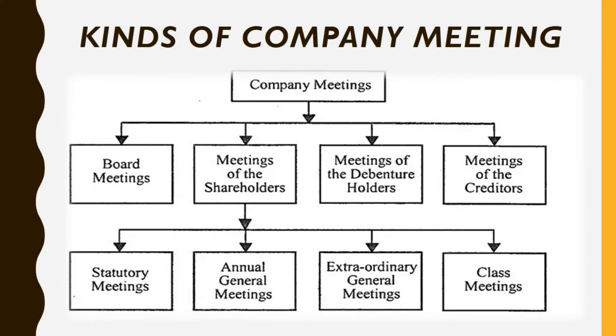The first one is board meetings. The second one is meetings of the shareholders. The third one is meetings of the debenture holders, and the last one is meetings of the creditors.